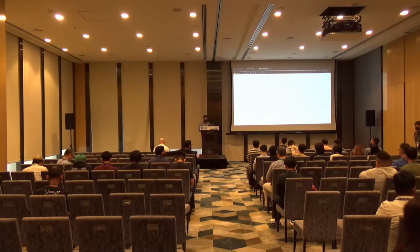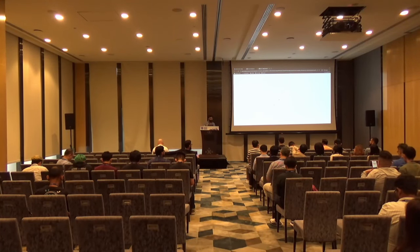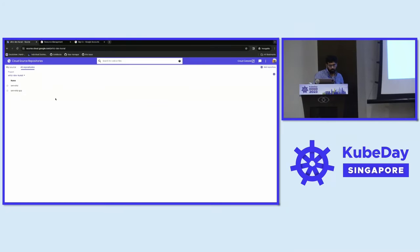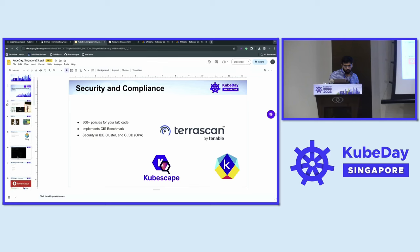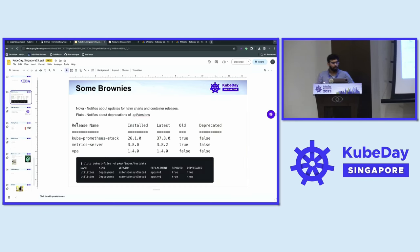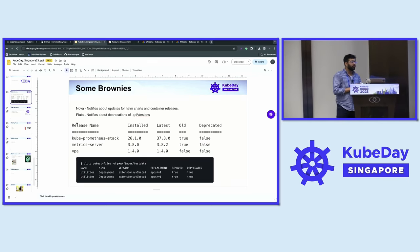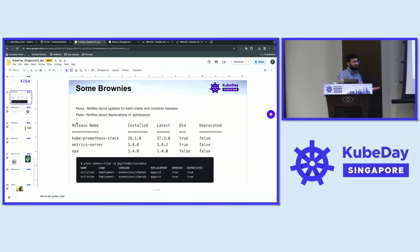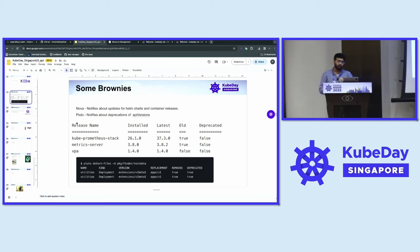Q&A: Regarding Nova and Helm chart version deprecation — how does it compare versions and identify deprecations? Nova already has a list of deprecated versions in its database. Their source of information is based on releases — they update their database as new releases come out. I think you can also customize it, for example marking versions after a certain release as deprecated, but I am not 100% sure yet.